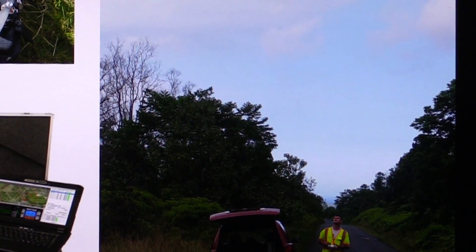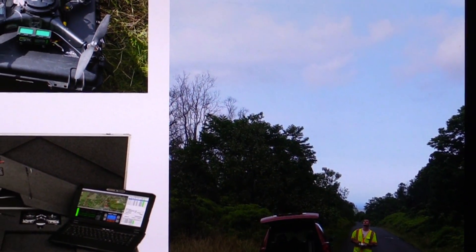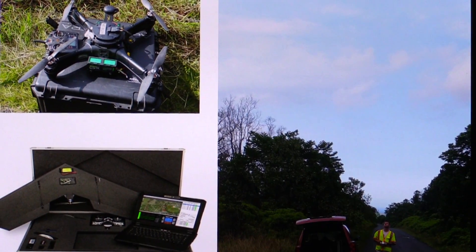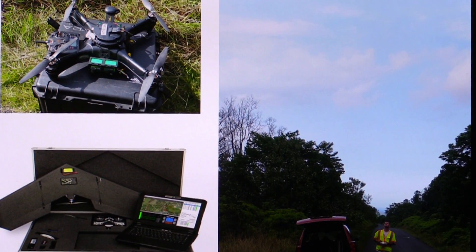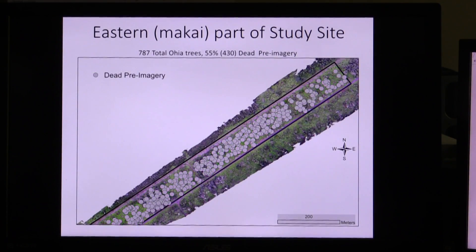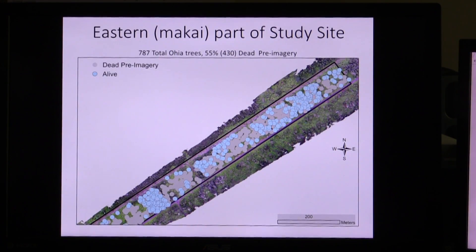How can drones help you solve that problem? They allow us to cover a lot more area than manned helicopters would, and much more safely as well. We're doing aerial surveys and map making — basically trying to cover as much area as we can so that we can tell the Forest Service or other management parties if an area has ROD.